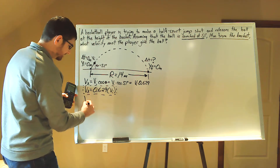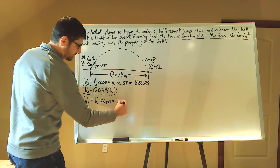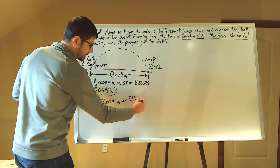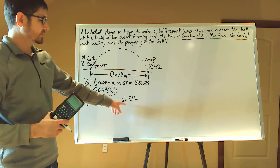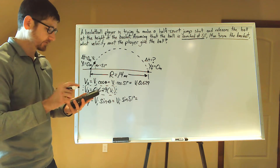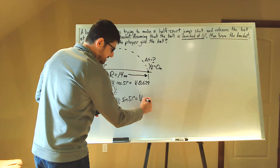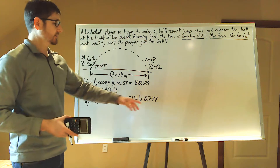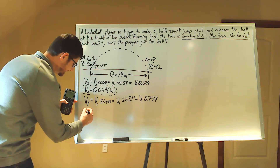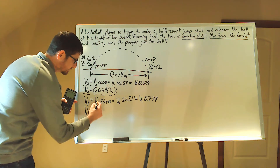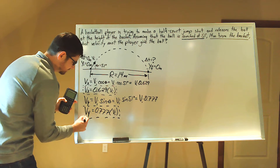We can also calculate the velocity in the y direction. This is initial velocity times sine of the angle theta, so initial velocity times sine of 51 degrees. Since theta is greater than 45 degrees, sine 51 should be greater than cosine 51. Sine 51 gives us 0.777, so v sub y equals 0.777 times initial velocity. I'll put a dotted box around this as well.